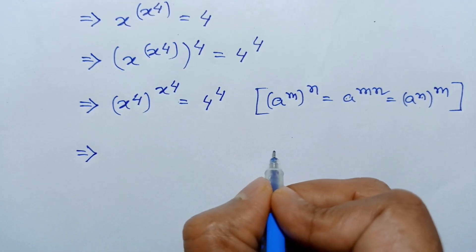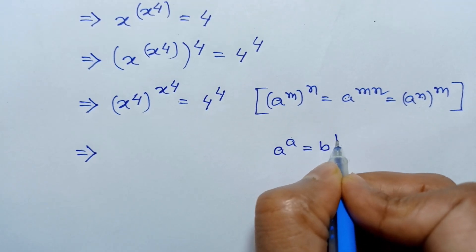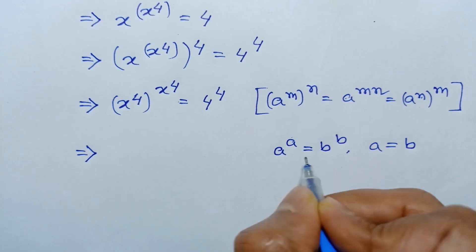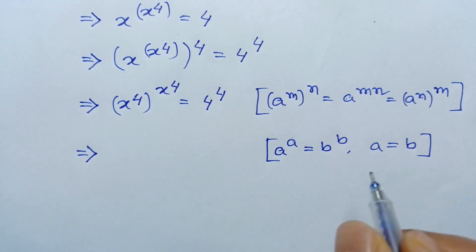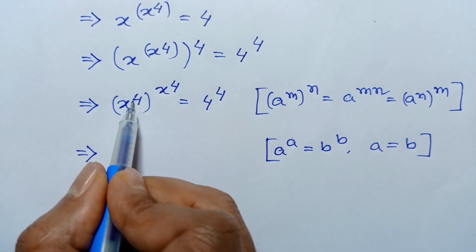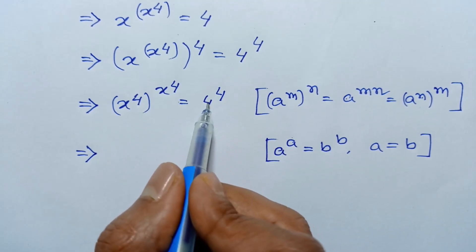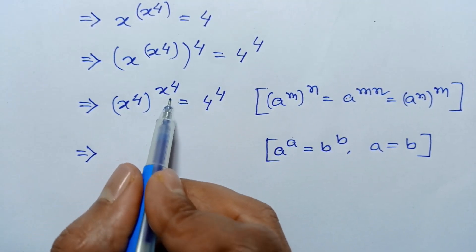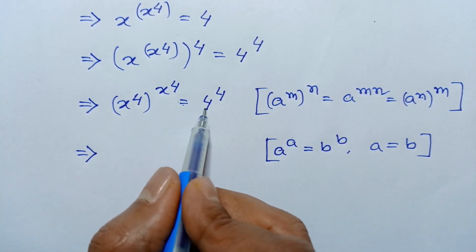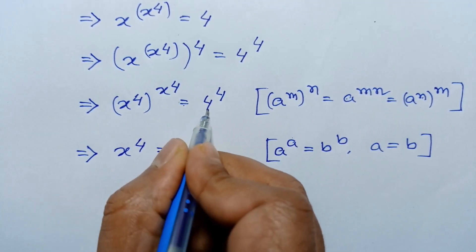Now applying the rule: when a to the power a is equal to b to the power b, then a is equal to b. Here x to the power 4 is a, and 4 is b. So a to the power a is equal to b to the power b, which gives us a equal to b, so x to the power 4 is equal to 4.